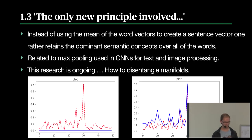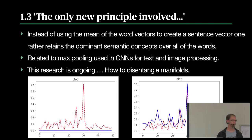From the abstract, for the work we're doing on concept embedding: instead of using the mean of word vectors to create the sentence vector, you attempt to retain the dominant semantic concepts over all of your words. It's kind of related to max pooling that you would typically use for convolutional neural networks. I can show a Python notebook at this point.